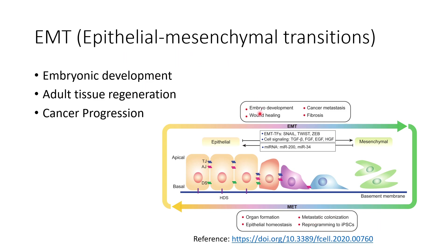There is also a reverse process called MET, that is mesenchymal-to-epithelial transition. This can be initiated with the injection of certain small tissue factors that help transition mesenchymal cells back to epithelial cells. The EMT process is usually observed in solid tumors, where tumor progression is increased through this process.